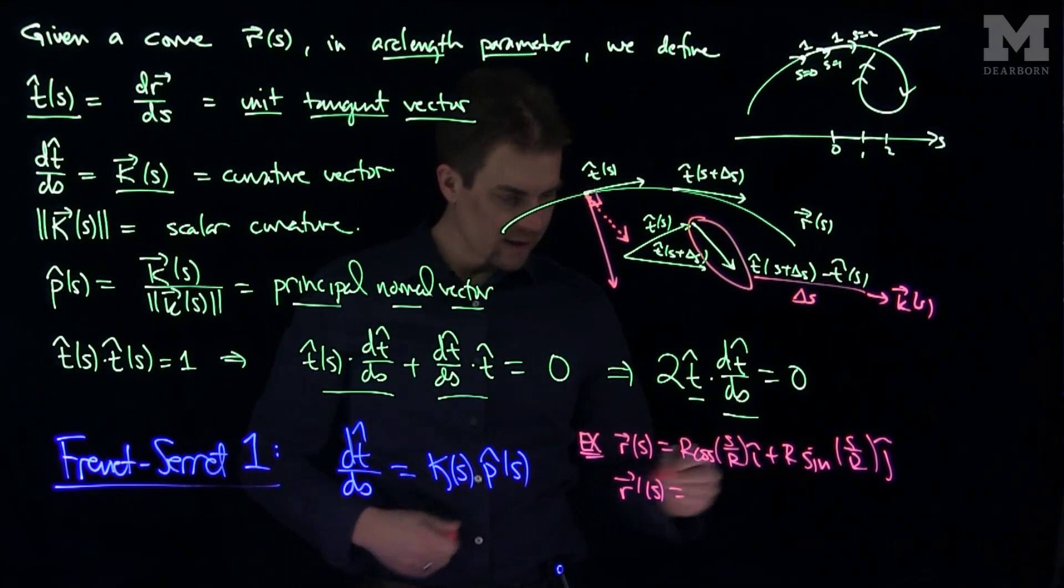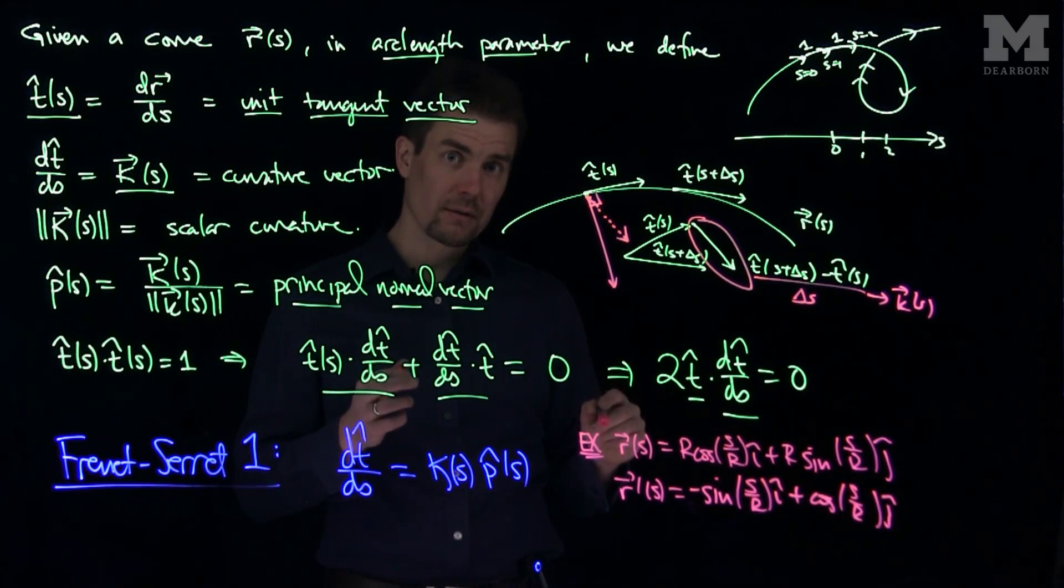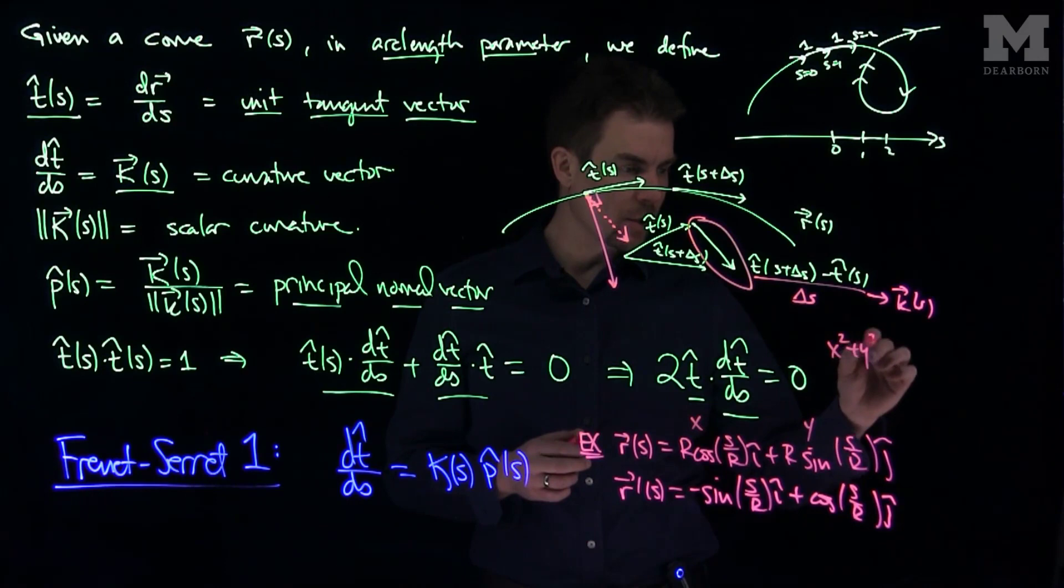Will be equal to negative sine of s over r i hat plus cosine of s over r j hat. That's the unit tangent vector to this curve, which happens to be a circle. This is my x and this is my y, then x squared plus y squared is equal to r squared.